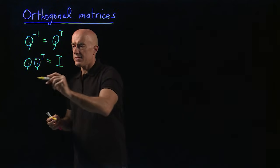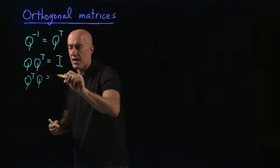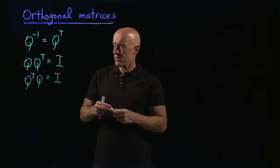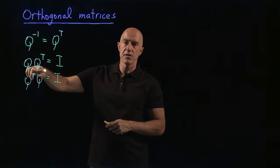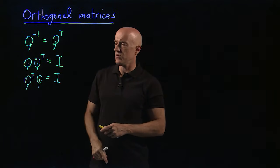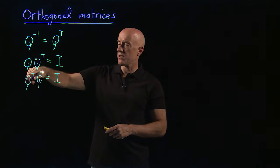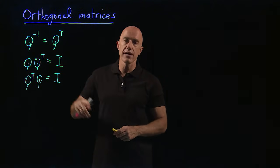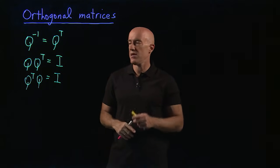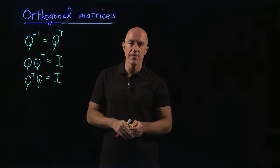But we can write this just as well as Q transpose Q equals I. Here, we're going across the rows of Q transpose, which is the same as going down the columns of Q. And we're going down the columns of Q. So here we're multiplying the column of Q against the column of Q. And if they're same, we get 1. And if they're different, we get 0. So the columns of Q also form orthonormal vectors.